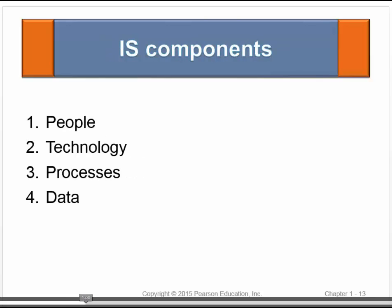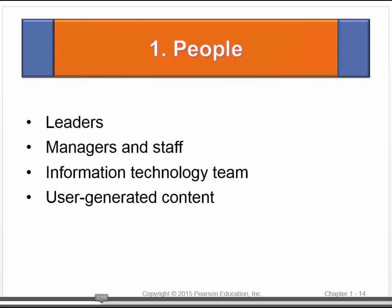An information system brings together four critical components to collect, process, manage, analyze, and distribute information: people, technology, processes, and data. We will now discuss each of these components individually.